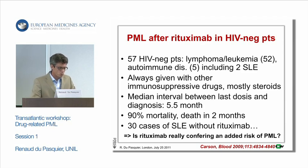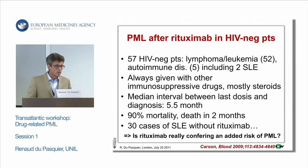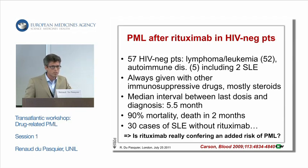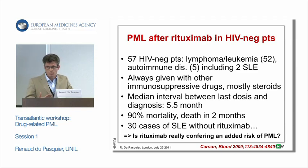The median interval between last dose and diagnosis was 5.5 months, and mortality was high. But at the time the paper was published, there had been more than 30 cases of PML in SLE patients who had not been exposed to rituximab — which is important to keep in mind when dealing with diseases that by themselves favor the onset of PML.